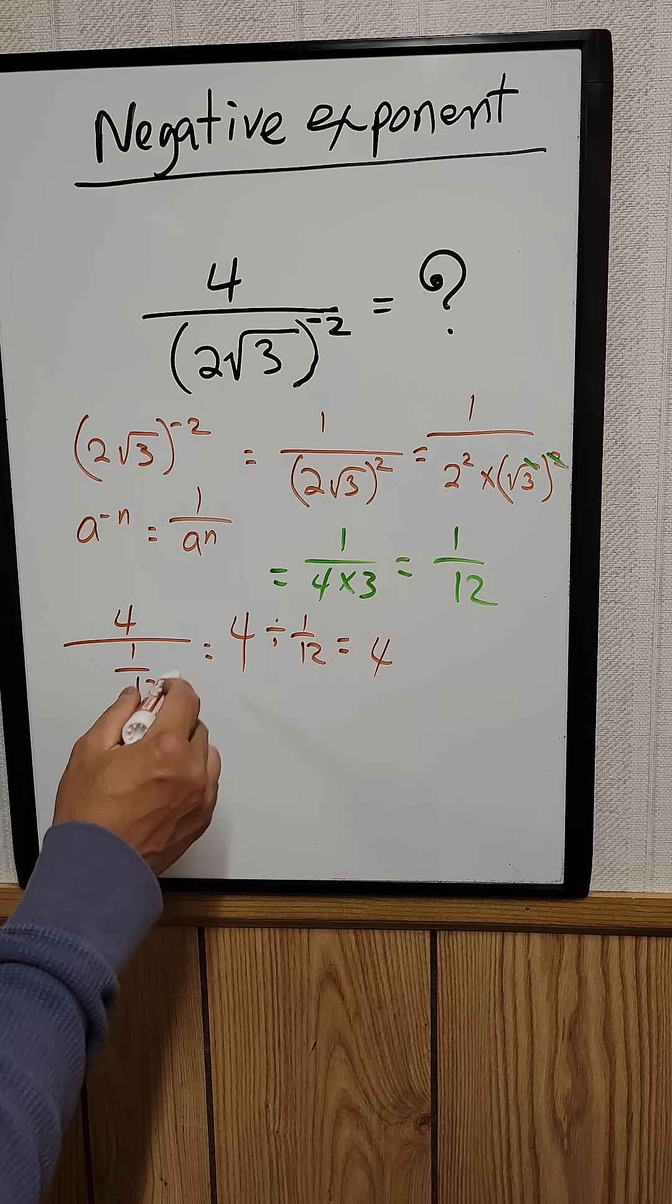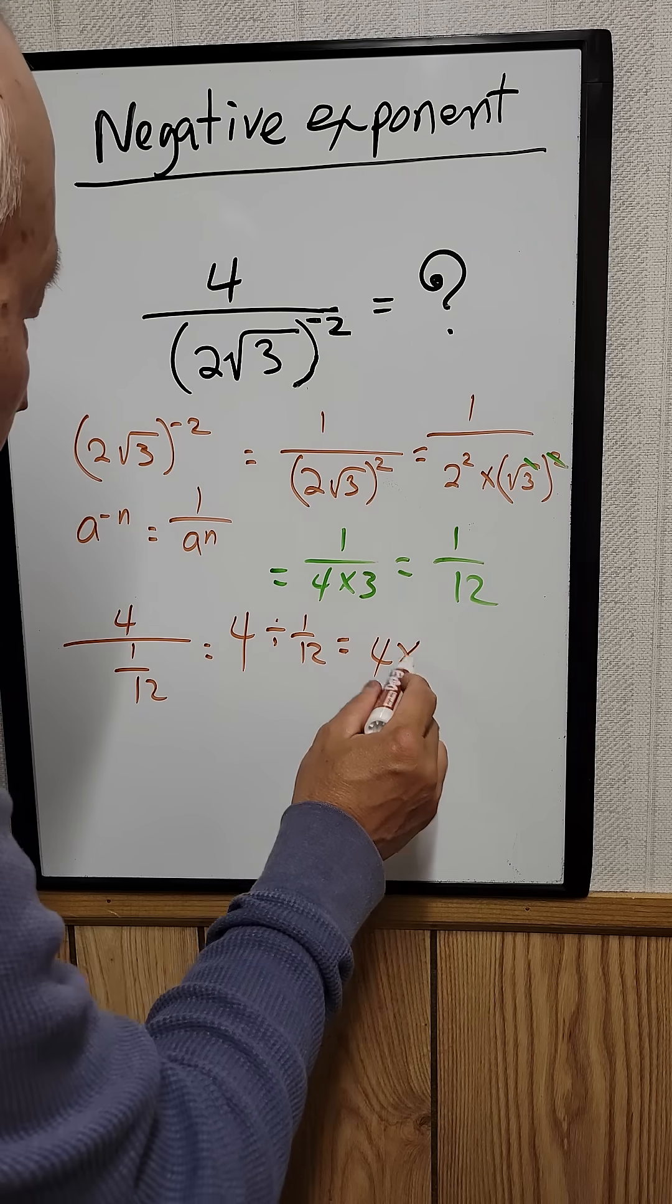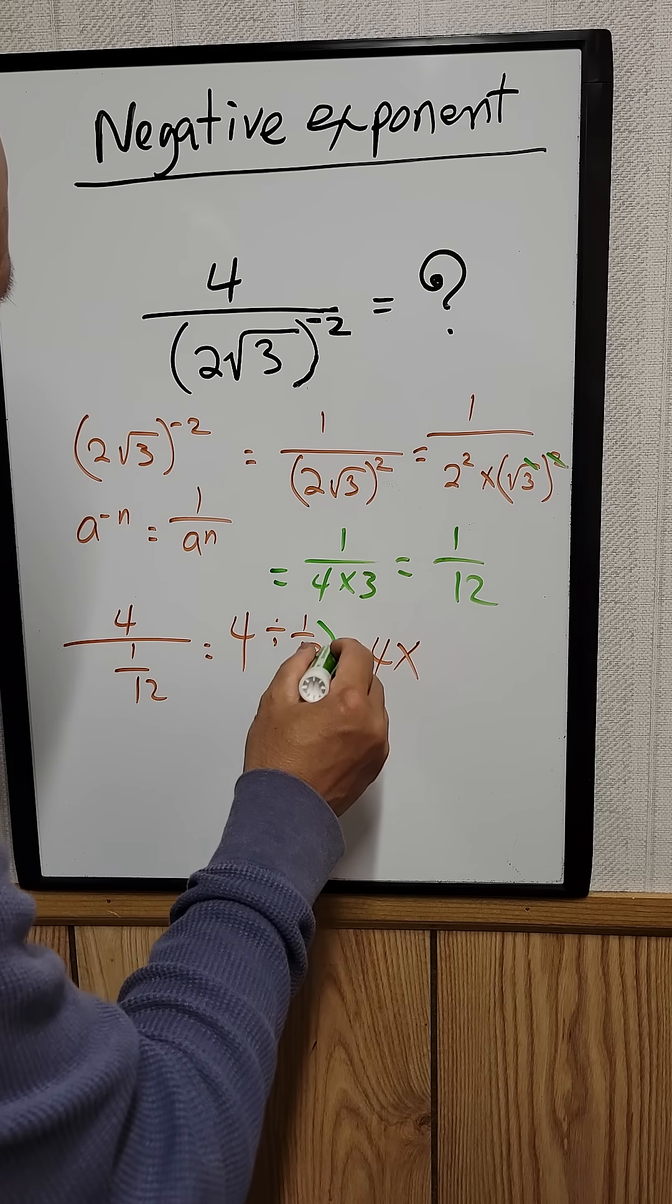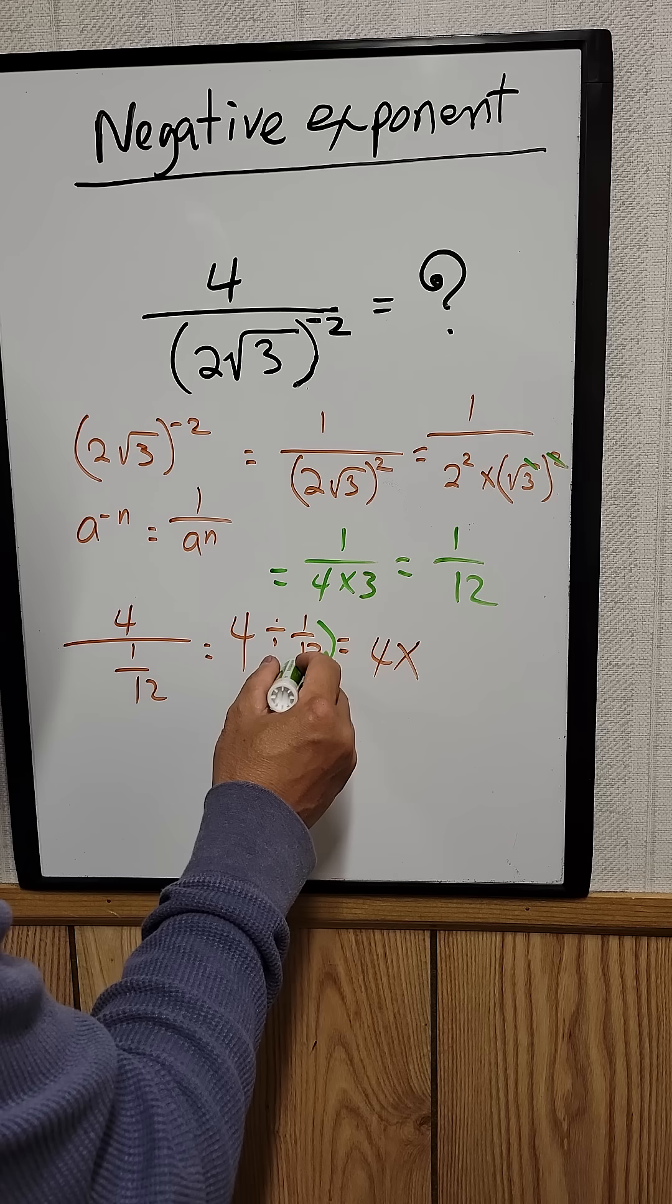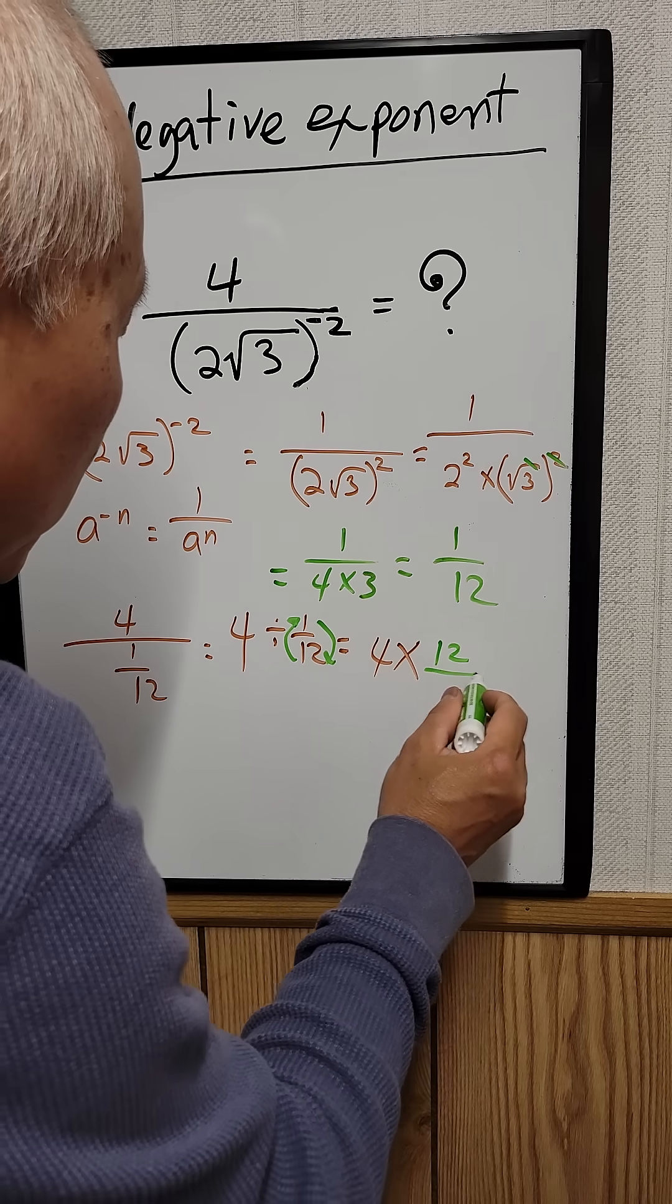Now we have to change the division sign into a multiplication sign and use the reciprocal. So 1 becomes the denominator and 12 becomes the numerator, giving us 4 times 12 over 1.